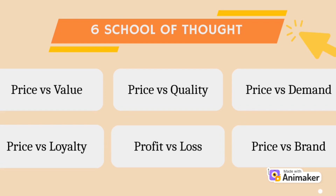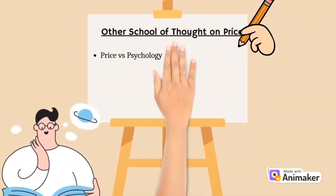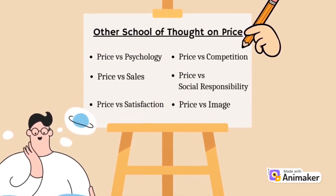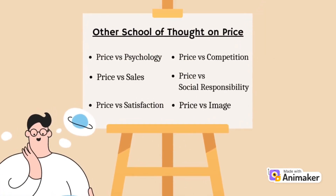The last school of thought is price versus brand. A brand refers to a business and marketing concept that helps people identify a particular company, product, or individual. Brands are intangible, meaning you can't actually touch or see them. We will also have the other school of thought on price: price versus psychology, price versus sales, price versus satisfaction, price versus competition, price versus social responsibility, and lastly, price versus image.